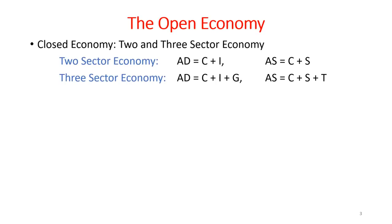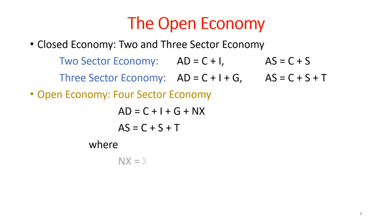The open economy is also called a four sector economy. In this economy, we interact with the external world in terms of exports and imports of goods. The aggregate demand and aggregate supply are expressed in terms of exports, where NX, that is net exports, represents exports minus imports.